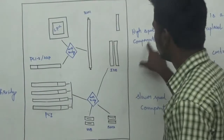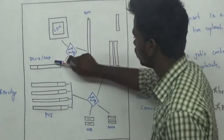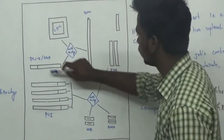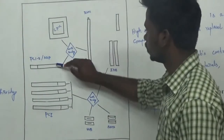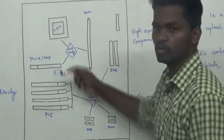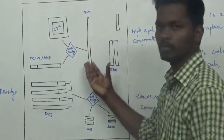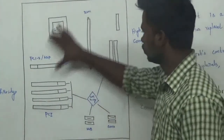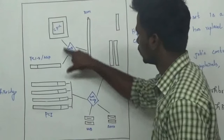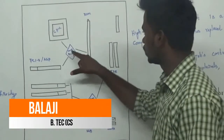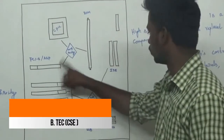This is the high speed component: the RAM, CPU, and AGP. These are the main processing components — the main memory and main processor. This is the North Bridge, which handles the RAM, CPU, and AGP — the high speed components.